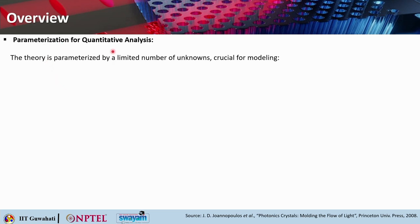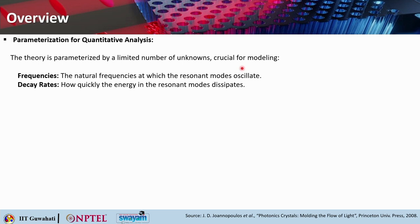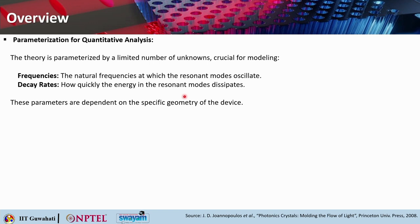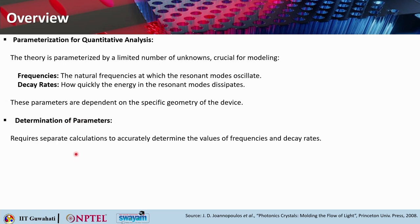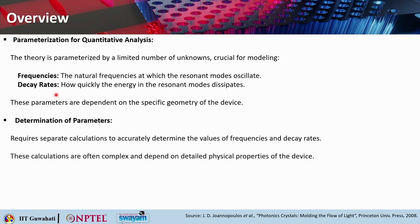The theory is parameterized by a limited number of unknowns crucial for modeling. First are frequencies — the natural frequencies at which the resonant modes oscillate. Then there are decay rates, which tell us how quickly the energy in the resonant modes dissipates. These parameters depend on the specific geometry of the device, which is where device-specific information enters the theoretical framework. Determining these parameters requires separate, often complex calculations depending on the detailed physical properties of the system.